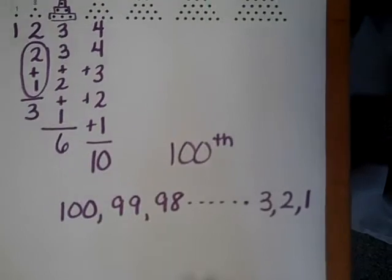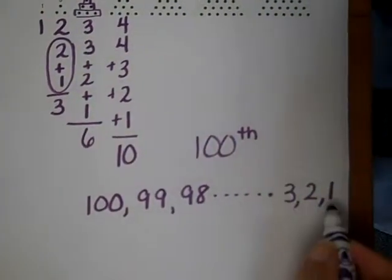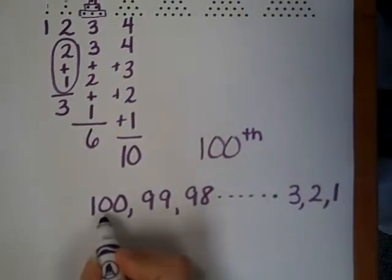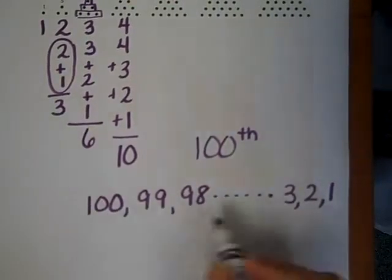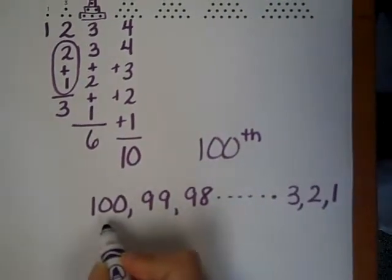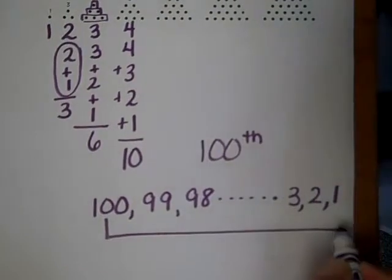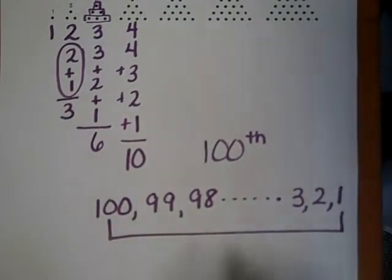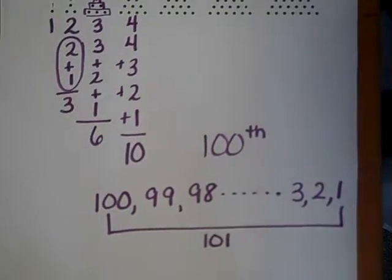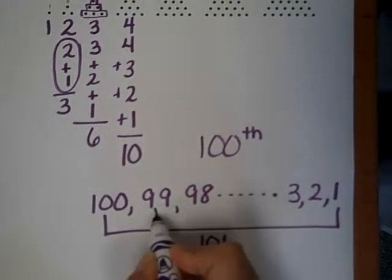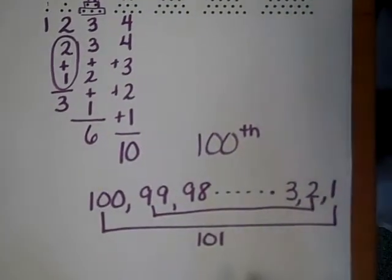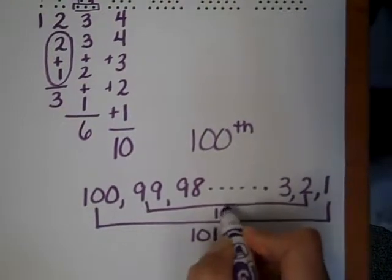So what he did was he paired these up. So in going backwards if this is the one hundredth number and we're summing all of these, he paired up the one hundred with the one and that would be one hundred and one. Then he paired up the ninety-nine with the two, also one hundred and one.